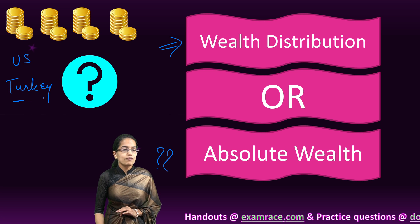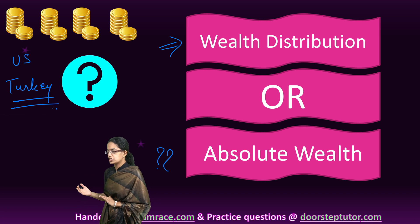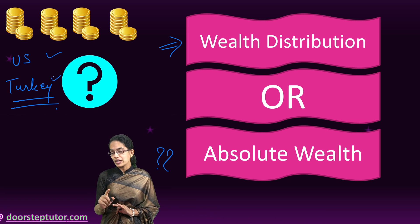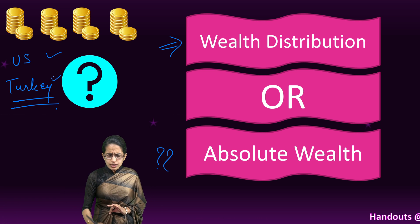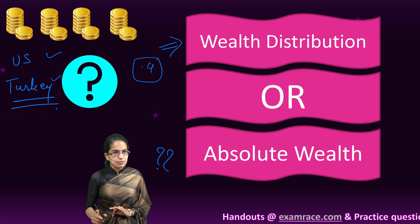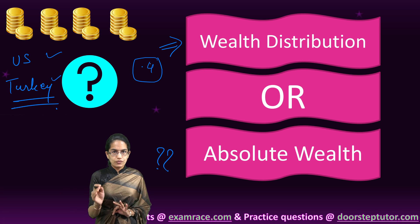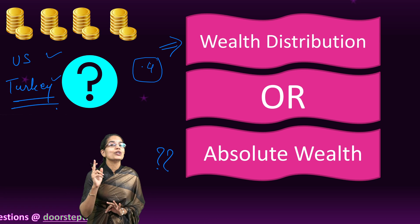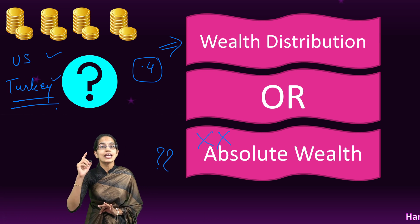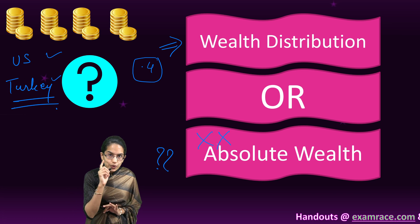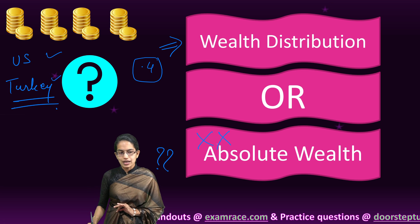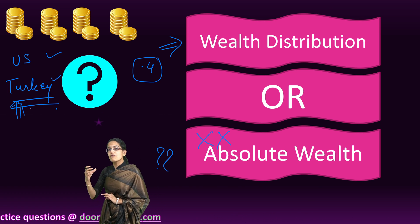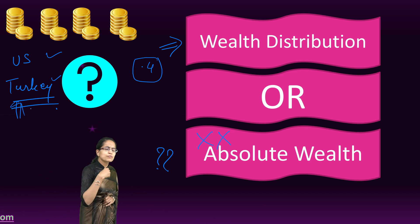If I talk in terms of the Gini coefficient, the Gini coefficient for both nations is the same — meaning the wealth distribution in these two countries is at par. If the value of the Gini coefficient is around 0.4, that means income is moderately distributed among the population, but that does not talk about absolute wealth. If we go into the details of GDP per capita, Turkey has only half the GDP per capita compared to United States.